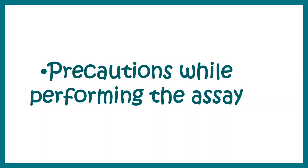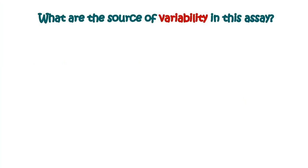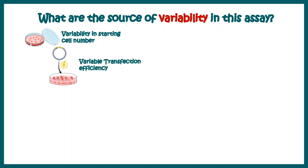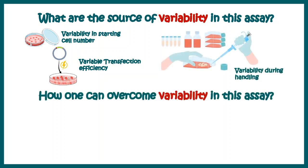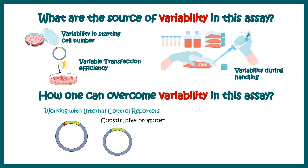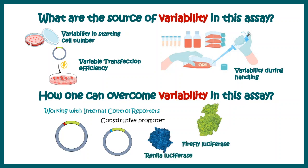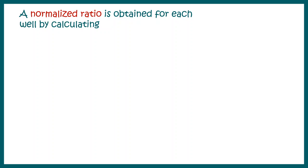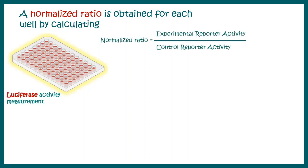Now while performing a luciferase assay, we need to understand a few precautions. There could be many variabilities that can affect our results — for example, using fewer cells, variability in transfection efficiency, or variability during cell handling. The answer is we can use an internal control: a luciferase driven by a constitutive promoter. Many luciferases can be used — for example, Renilla luciferase, firefly luciferase — and each has its own purpose. A normalized ratio is obtained for each well by calculating the experimental reporter activity divided by the control reporter activity.